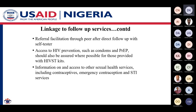Referral facilitation through peers after direct follow-up is another important approach. Access to HIV prevention — such as condoms and PrEP — should be assured for those testing negative. Information on access to other sexual health services, including contraceptives and emergency contraceptives, should also be provided.